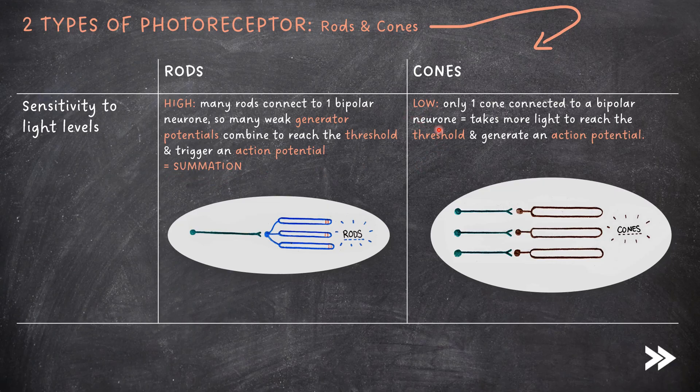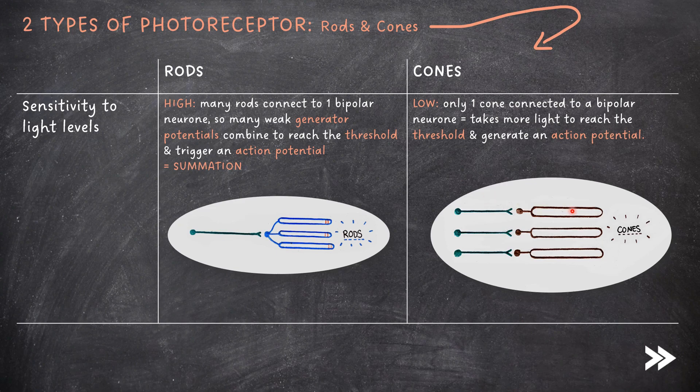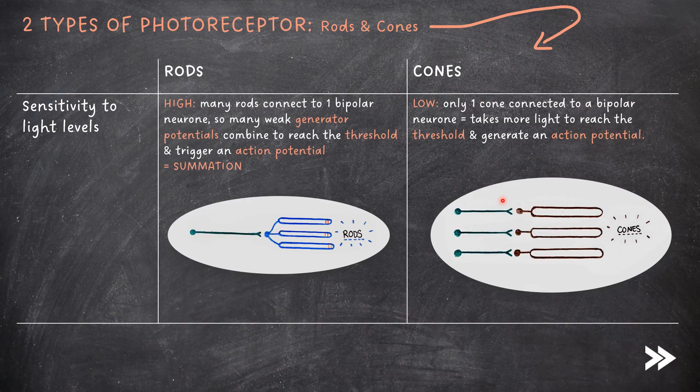Cones, on the other hand, have a low sensitivity to light levels, because only one cone connects to one bipolar neuron, meaning that it takes much more light to reach the threshold and generate an action potential.